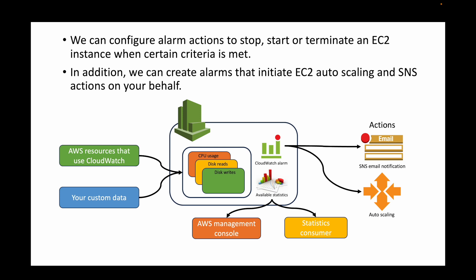So once again: we have your AWS resources which push metrics to the CloudWatch repository. From the CloudWatch repository we create statistics and display them in the AWS console, or use third-party consumers. In addition, we can use CloudWatch alarms to take certain actions — for example, whenever CPU usage breaches the threshold we can send a simple email notification to notify the responsible team, or take actions like launching new instances or terminating old instances. That is how CloudWatch operates in the back end.